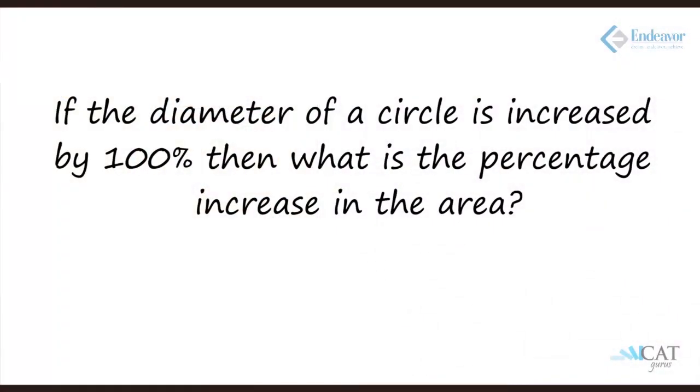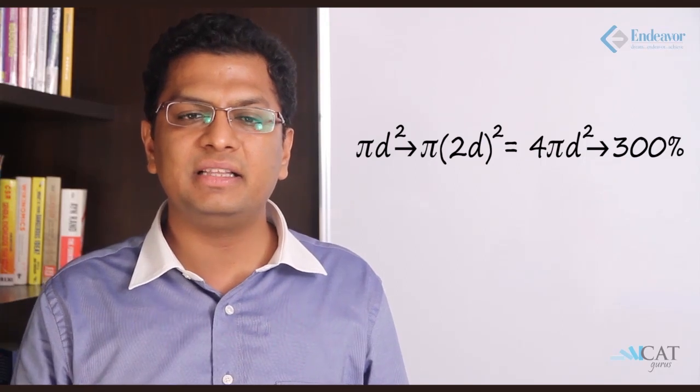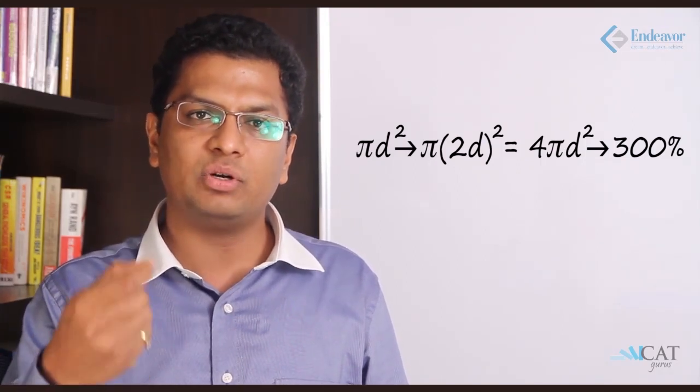If the diameter of a circle is increased by 100%, then what is the percentage increase in area? The area of a circle is pi r square, or equivalently pi d square upon 4. Now if the diameter is doubled — increased by 100% — the new d becomes 2d. So the new area is pi into 2d whole square upon 4, which gives pi d square. Earlier it was pi d square upon 4, now it is pi d square — an increase of 300%. That is the increase in area when you do a 100% increase on the diameter.